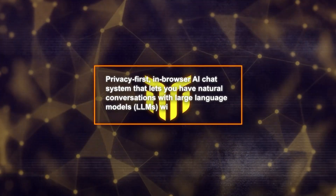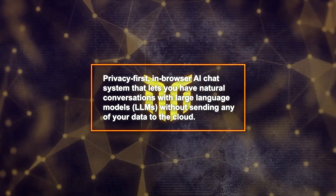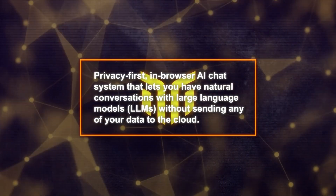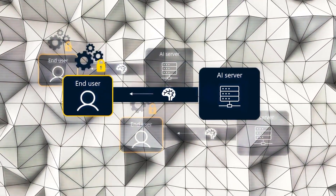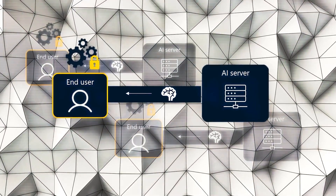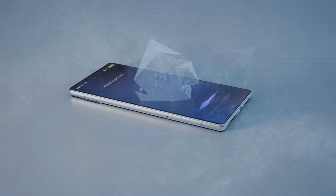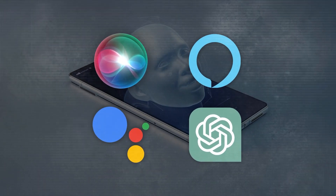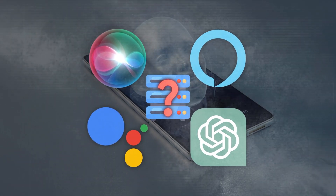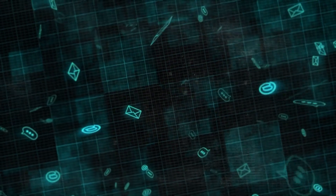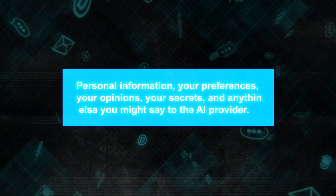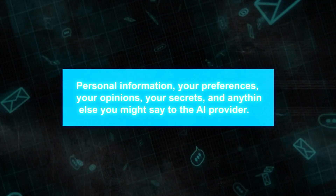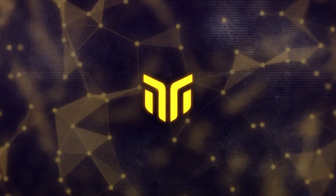BlindChat is a privacy-first in-browser AI chat system that lets you have natural conversations with large language models without sending any of your data to the cloud. Unlike other chat systems, where what you say is sent to the company's servers, BlindChat keeps everything on your device. For example, when you talk to Google Assistant, Siri, Alexa, or even ChatGPT, they send your conversations to their servers, and you don't really know what happens to that information. You're basically giving away your personal information, your preferences, your opinions, your secrets, and anything else you might say to the AI provider.